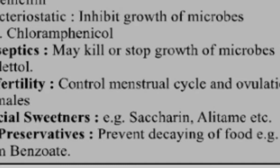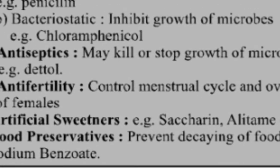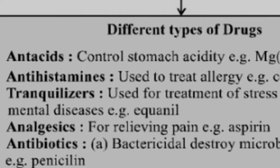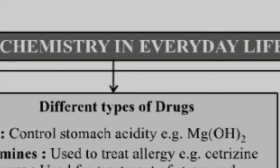Food preservatives prevent the decaying of food, like sodium benzoate. This is a very important question — it has been asked many times in CTET: which compound is used as a food preservative? The answer is sodium benzoate. Sodium chloride also appears in NCERT as an answer, but basically sodium benzoate is the primary food preservative used, so write sodium benzoate. These are the drugs and other useful chemicals used in our everyday life.